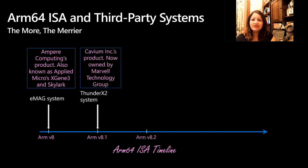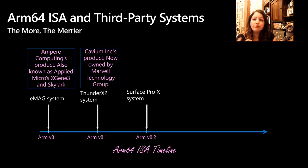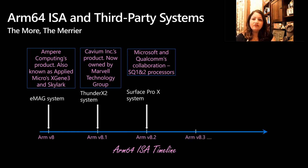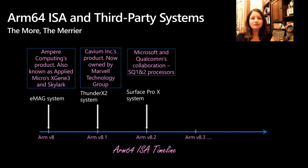Next comes ARMv8.2. We have our very own Surface Pro X systems. As many of you may know, Microsoft and Qualcomm work together to bring us the SQ1 and SQ2 processors. Right now, many systems based on ARMv8.3 architectures are either in development or have been announced and will be available soon.